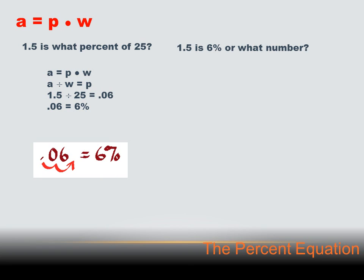Let's try another one. What if the problem were: 1.5 is 6% of what number? I know the percent, and 1.5 is the portion — I'm trying to solve for W, the whole. I've got A equals P times W, but I need to isolate W, which means I've got to divide both sides by P. That leaves W on the right and A divided by P on the left. I know A is 1.5 and P is 6% (or .06). So 1.5 divided by .06 is 25.